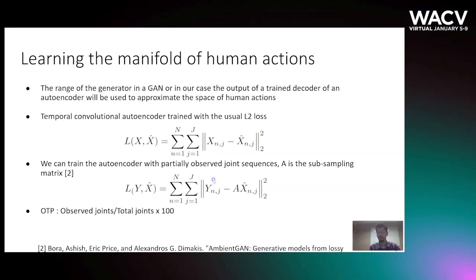We now define an important measure called the OTP, which is the ratio of the number of observed joints to the number of total joints expressed as a percentage by multiplying by 100. We are interested in settings where both the training and test sets have OTPs less than 100%, and they can also be different from each other.